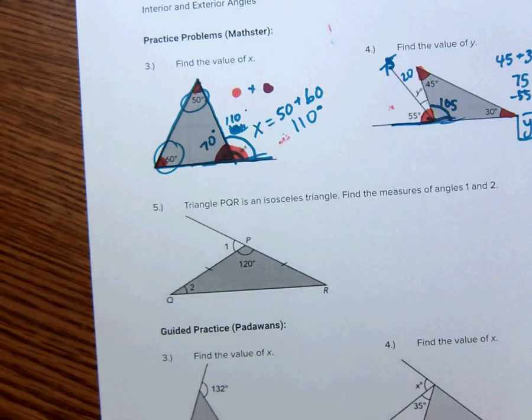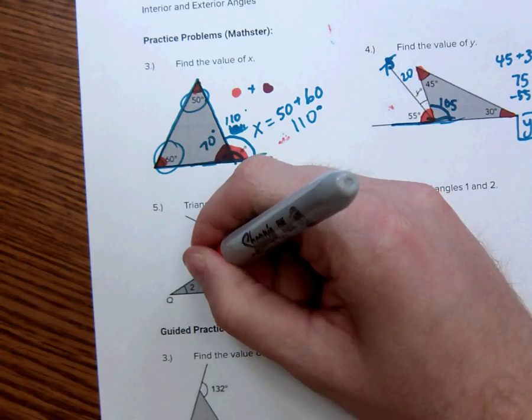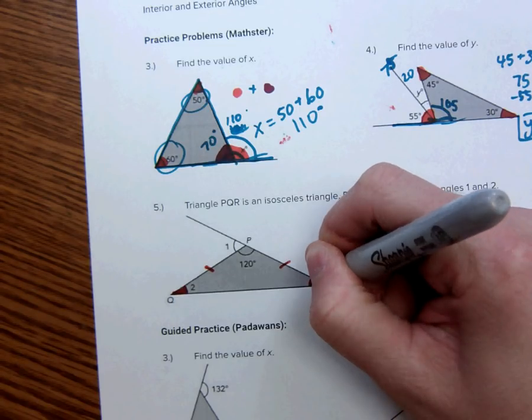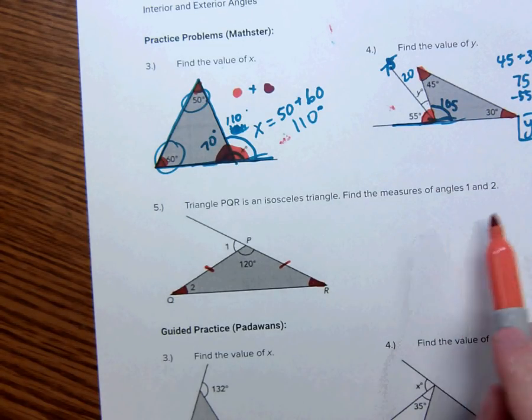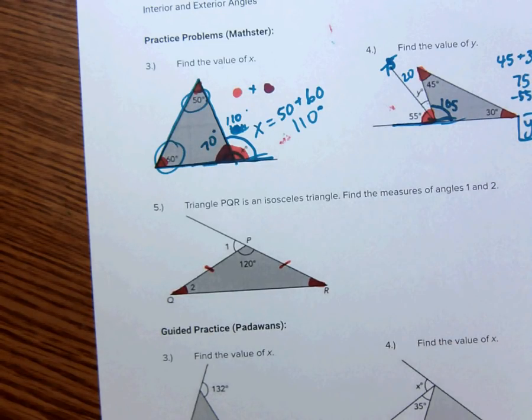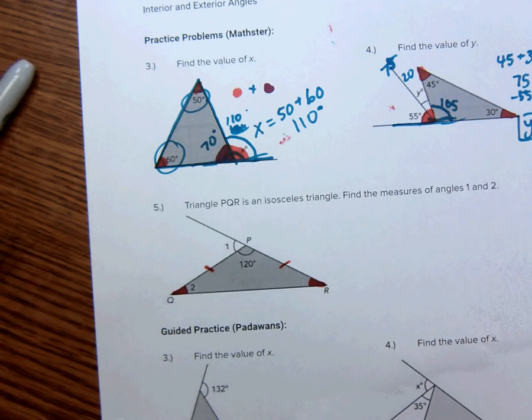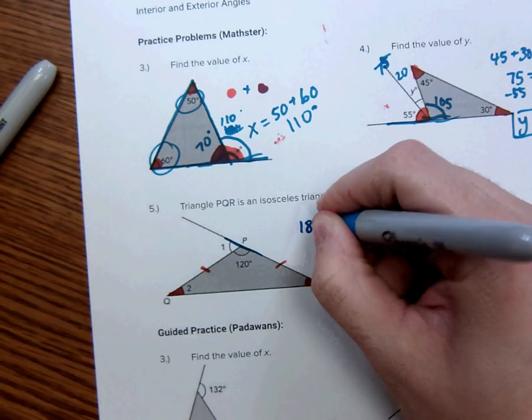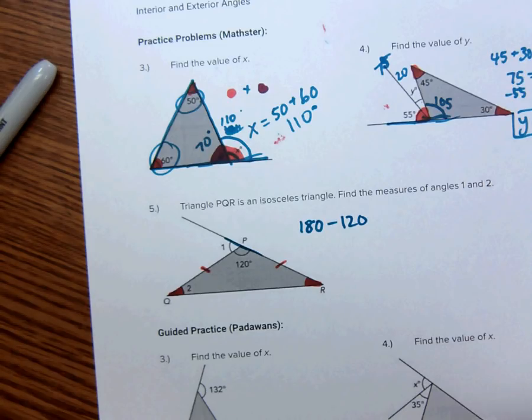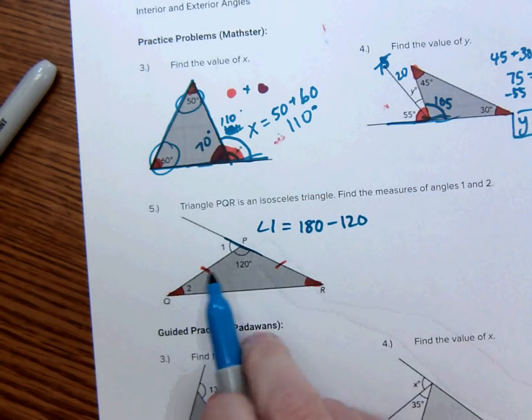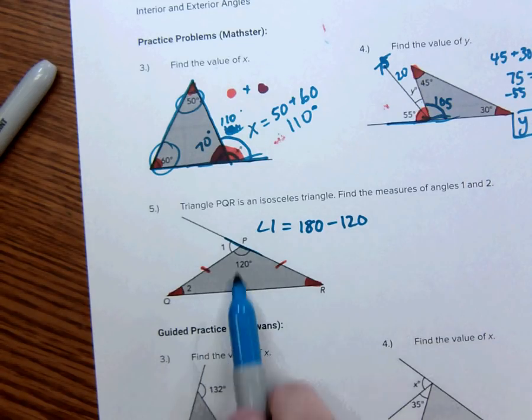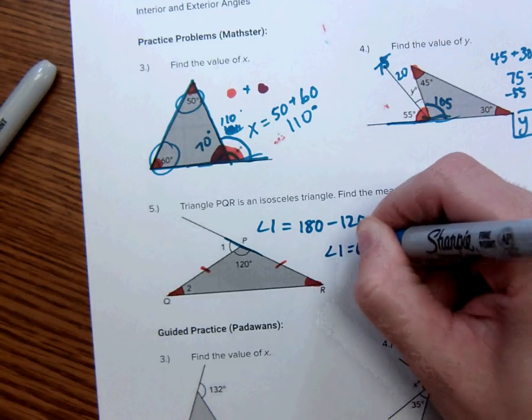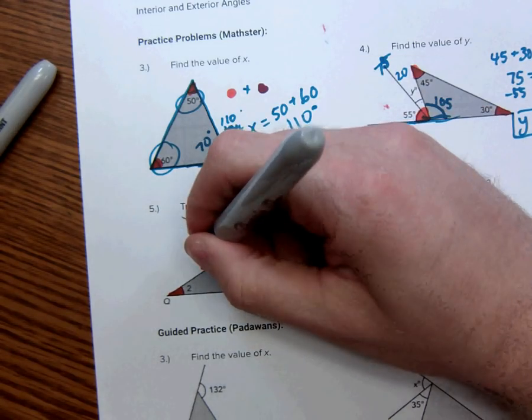Again, triangle PQR is isosceles. Great. That means that these two lines are the same. That means that this angle is the exact same angle as this angle, because they are on opposite sides. Find the measures of angles 1 and 2. So, I can find 1 because this is a line here. So, angle 1 is going to be 180 minus 120. These two are supplementary. They make a line. So, 180 minus 120 is 60. So, angle 1 is equal to 60 degrees.